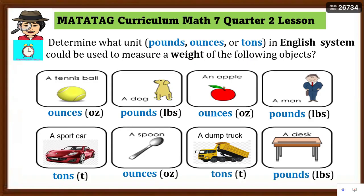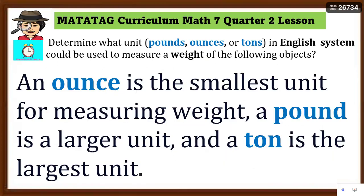How do we know when to use ounces, pounds, or tons? Remember: in the English system for measuring weight, an ounce is the smallest unit for measuring weight, a pound is a larger unit, and a ton is the largest unit.